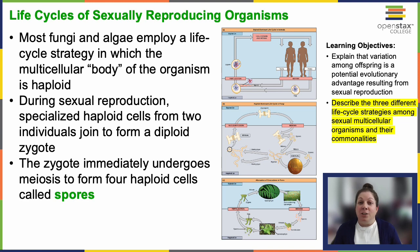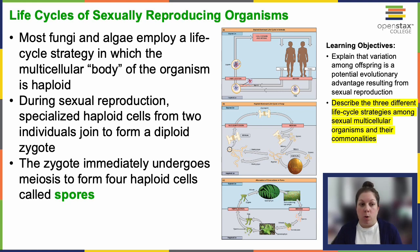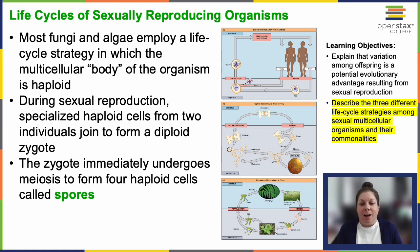In the life cycle of many fungi and algae, the main multicellular form of the organism is haploid — this is one of those unusual ones. During sexual reproduction, specialized haploid cells form from two individuals and unite to create a diploid zygote. This zygote promptly undergoes meiosis — so meiosis happens after fusion of the gametes instead of before. This zygote goes through meiosis and yields four haploid spores. Those four unique spores can then fuse with other spores they encounter and go through the process all over again.